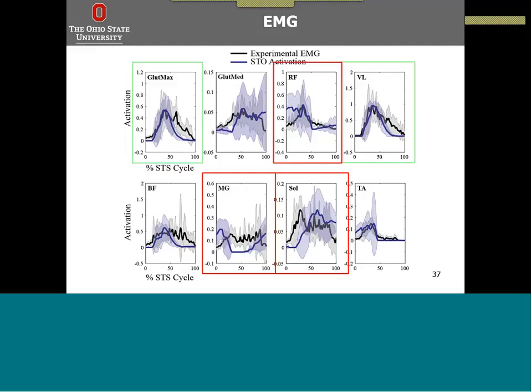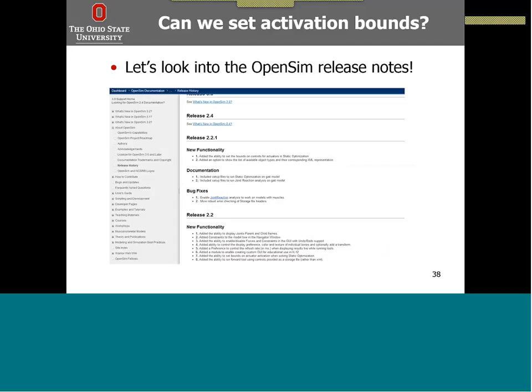So we still need to fix this problem. If you're using computed muscle control or CMC, it is possible to restrict activations so you can have them on and off at a certain magnitude for a certain time. But can we do that with static optimization? Let's look at what the capabilities are in the OpenSIM release notes. Going to the user's guide and the 2.2 release notes, it said there was an added ability to set the bounds on controls for actuators in static optimization.